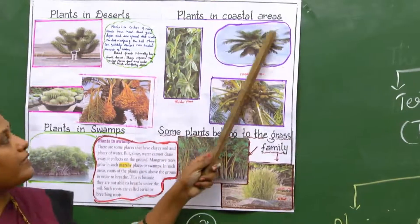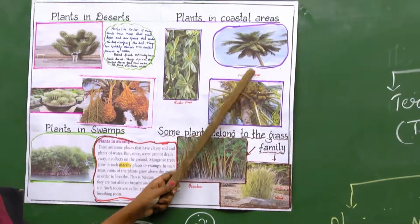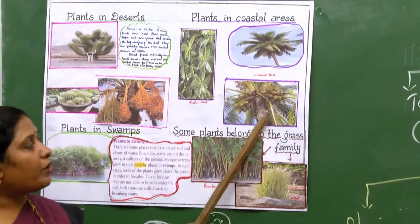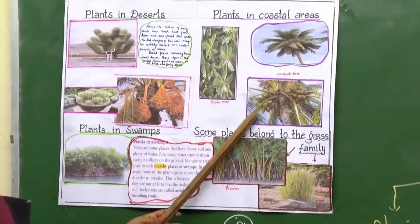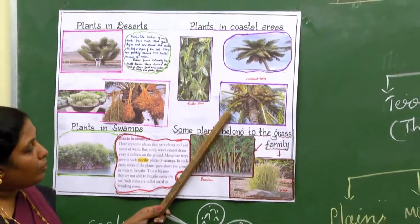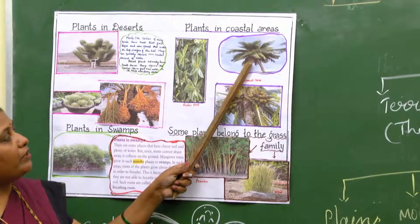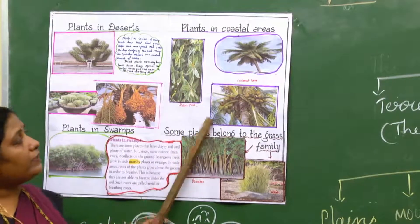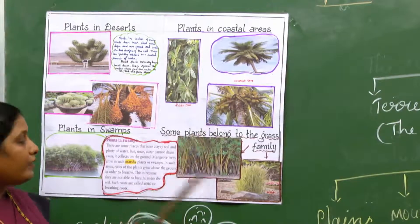There is one more region called coastal areas. Plants grown in coastal areas include rubber plant and coconut tree, which are very common. These plants are always green in color and never shed their leaves, as they are getting plenty of water throughout the year, so they are not at all getting dry.